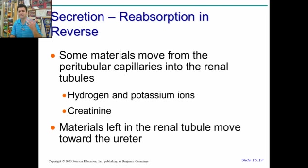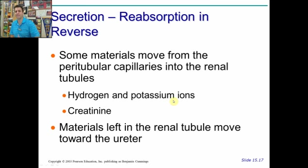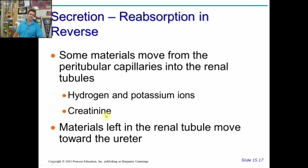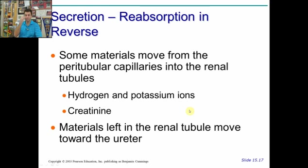Secretion is the opposite — it's going to move stuff from the blood back into the renal tubule. This includes hydrogen ions and potassium ions, which helps eliminate those and is important for acid-base balance. Creatinine is also going to be secreted. And then anything excess that's left behind in the renal tubule is going to move on its way to the ureter to be peed out.